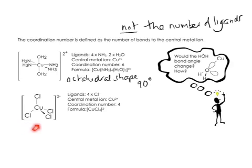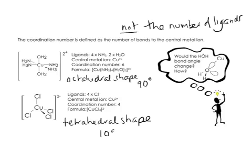Here's an example of a complex ion that has four ligands — all four are chloride ion ligands. We now have a coordination number of four. Here's the formula. This complex ion would be a tetrahedral shape with a bond angle of 109.5 degrees.